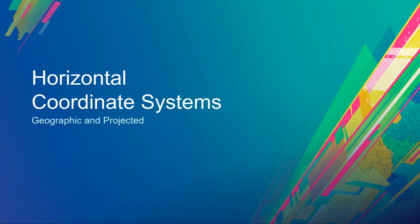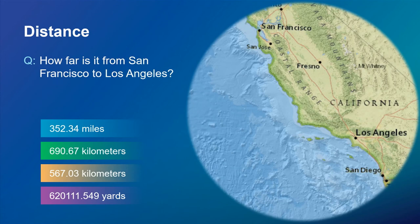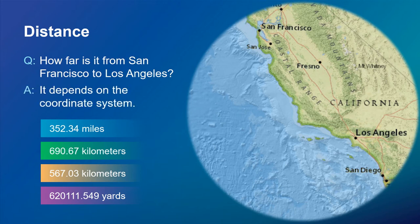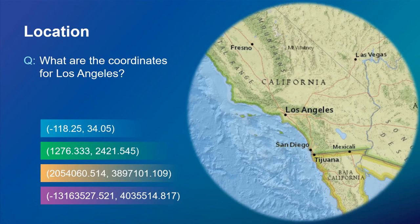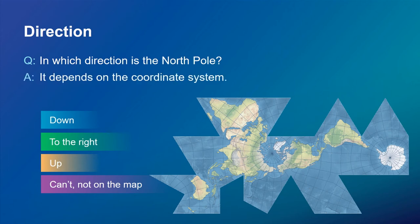We have two different types of supported horizontal coordinate systems: geographic and projected. What does a coordinate system tell us? It tells us distance between points, location, and direction. For instance, how far is it from San Francisco to Los Angeles? We've got four different answers, none equivalent — it depends on what coordinate system you use. Similarly, the coordinates for downtown Los Angeles have four different answers in various coordinate systems, and they're all correct depending on which system you're using. Even the direction to the North Pole depends on your coordinate system — it could be down, to the right, to the left, or not on the map at all.